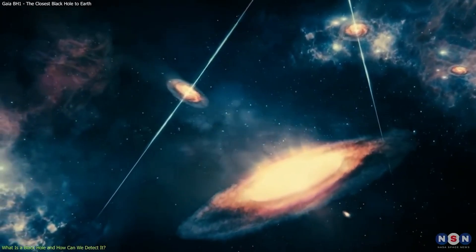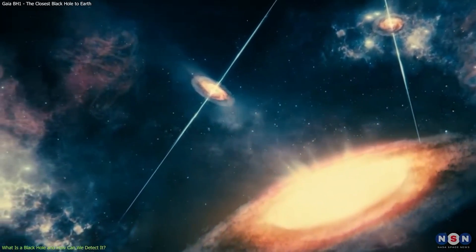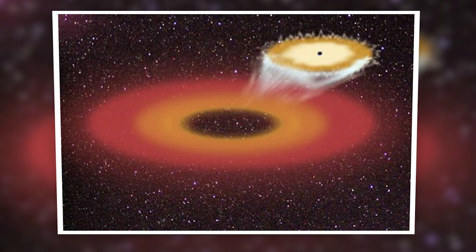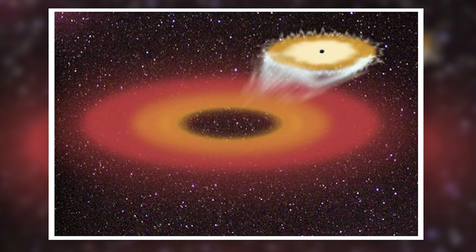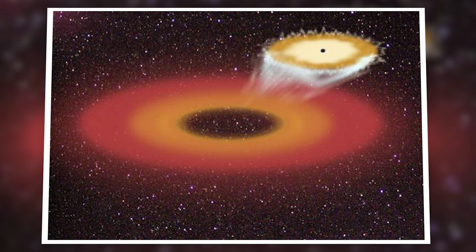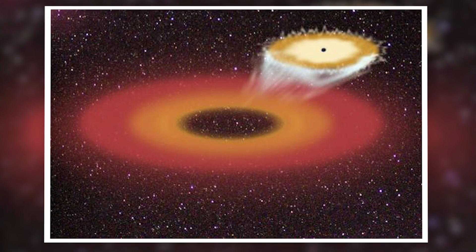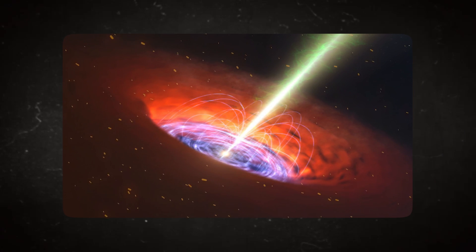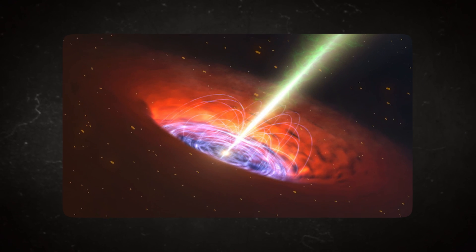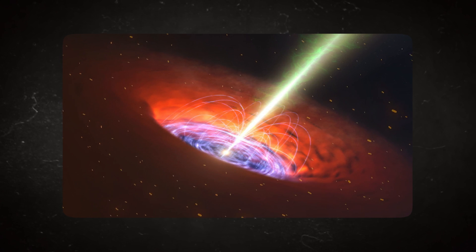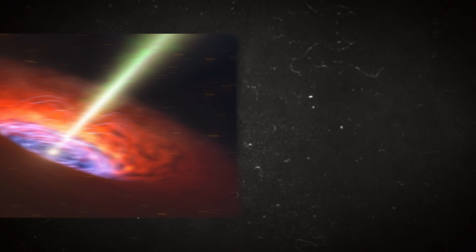Black holes can be ejected from the scene of a galaxy collision and go on a cosmic adventure. SDSS J0927+2943 is the first such rogue black hole discovered and it may have a mass of 600 million times that of the sun and travel across space at a speed of 5.9 million miles per hour. The Milky Way could be traversed by hundreds of black holes that have gone rogue.